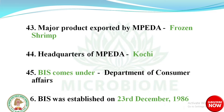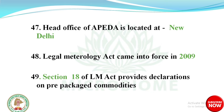The major product exported by MPEDA is frozen shrimp, and its headquarters is at Kochi. MPEDA comes under the Department of Consumer Affairs and was established on 23rd December 1986. The head office of MPEDA is located at New Delhi.